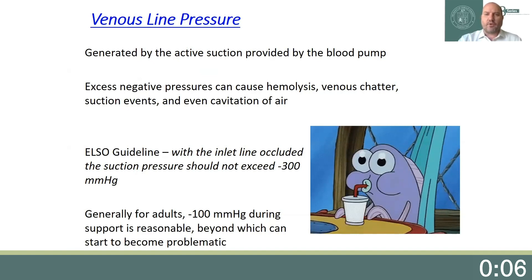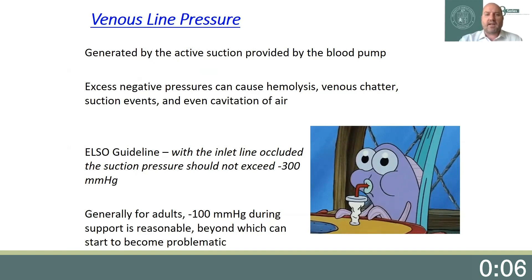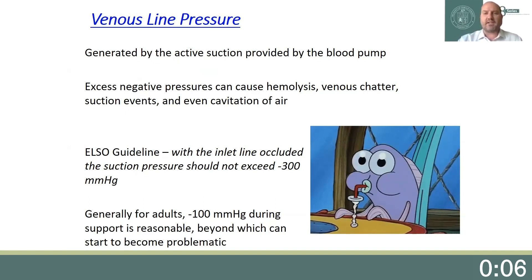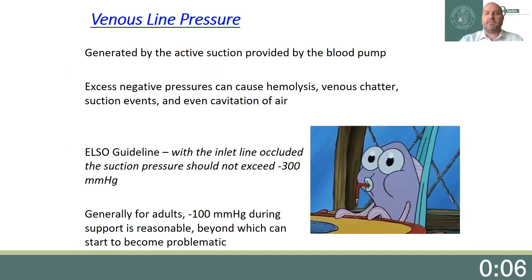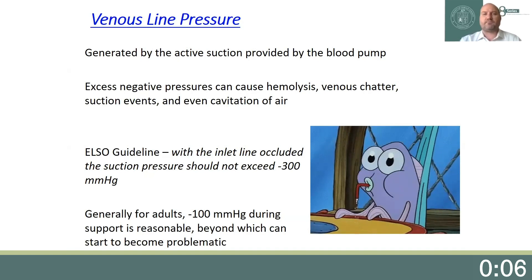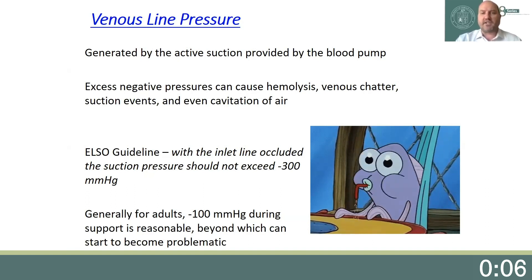Identifying abnormal venous line pressure or pressure trending is important for understanding clinical consequences. Venous line pressure is generated by the active suction provided by the blood pump. Excess negative pressures can cause hemolysis, venous chatter or suction events, and even cavitation of air. These events can occur if the tissue surrounding the cannula gets sucked down around the cannula tip, limiting venous return. ELSO guidelines state that with the venous line inlet occluded, the suction pressure should not exceed negative 300 mmHg. This can be accomplished by keeping pump speed minimal or by using servo regulation to ramp down pump speed in response to excess negative pressure. Generally for adults, most would agree that negative 100 mmHg during support is reasonable, beyond which it can start to become problematic.